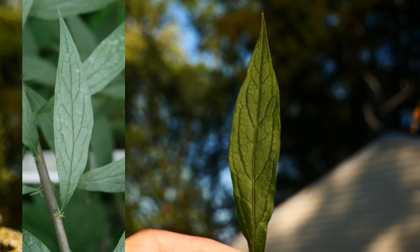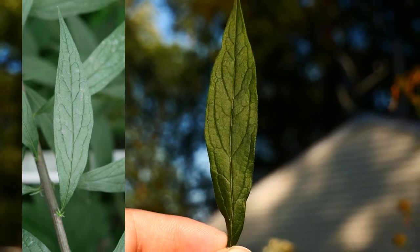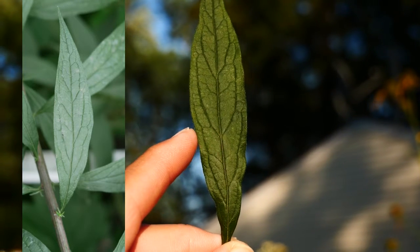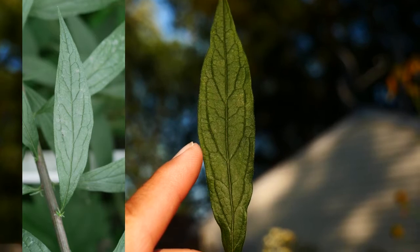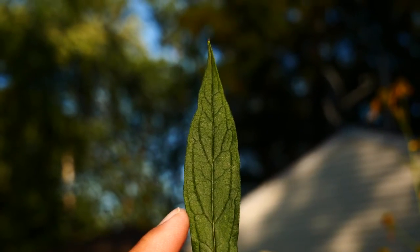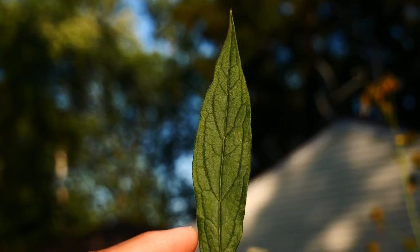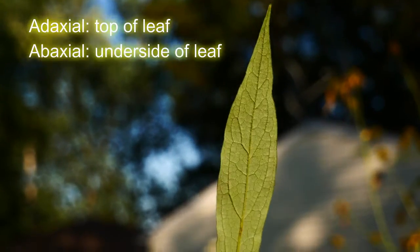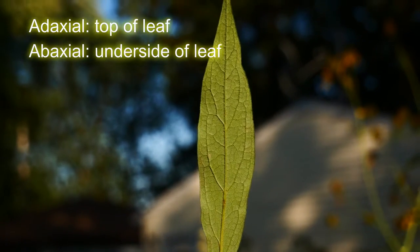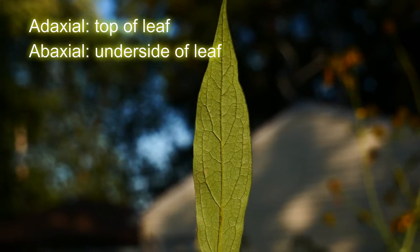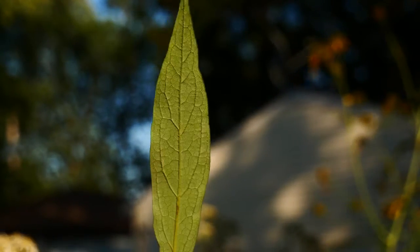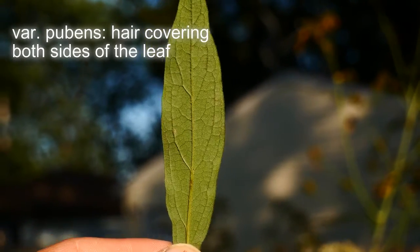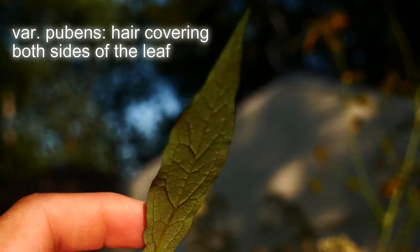You can see it has these divergent veins that kind of run parallel up the side — they just run parallel, these veins. It's widest at the middle and kind of tapers to both sides, as you can see here. That's kind of indicative of the dolingerias. It's darker green on the adaxial, or the top surface, and lighter pale green on the abaxial, or the bottom surface. Variety pubens is going to have a lot of hair on the underside and on the top of the leaf.